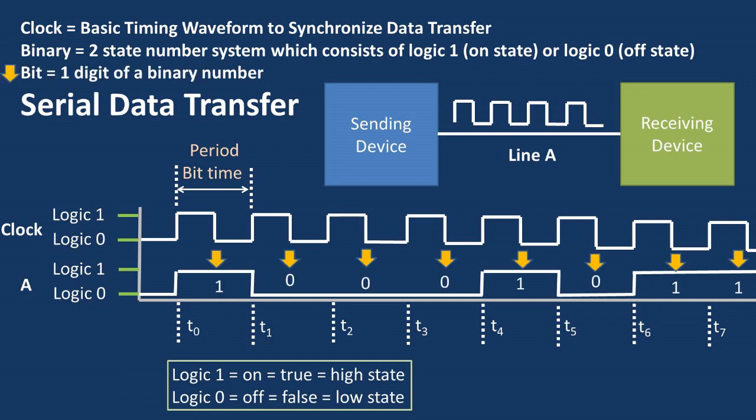And finally, a bit, which is one digit of a binary number system — so a one or a zero. As pictured and represented with the letter A, these bits will form a square waveform that will be sent on the line connecting the sending and receiving device.